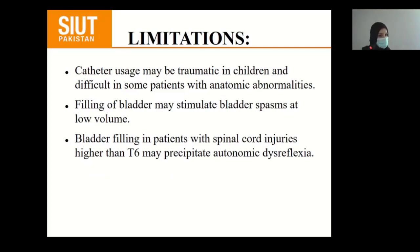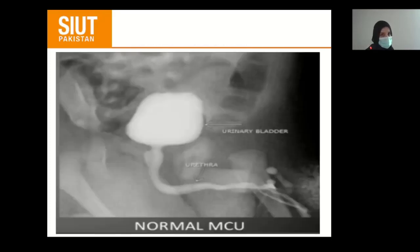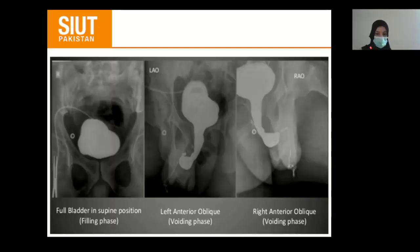Limitation of the voiding cystourethrogram: catheter use may be traumatic in children and difficult in patients with anatomic abnormalities. Bladder filling may stimulate bladder spasm. Bladder filling in patients with spinal cord injury higher than T6 may precipitate autonomic dysreflexia, causing raised blood pressure. This is the normal micturating cystourethrogram showing the bladder, bladder neck, and urethra. Full bladder filling phase is shown, along with left anterior oblique and right anterior oblique views.